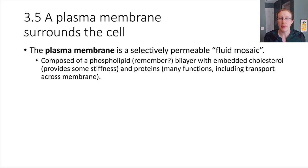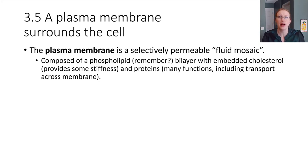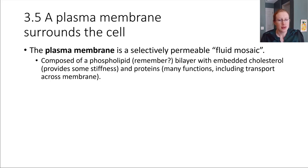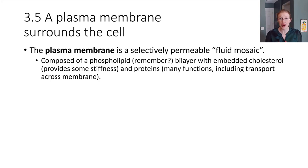I mentioned earlier, kind of in passing, that all cells have a plasma membrane. Let's look at the plasma membrane in more detail. So what is it composed of, and what does it do for the cell, aside from just providing a separation between the cell and its environment?